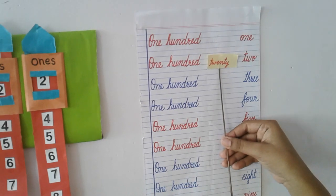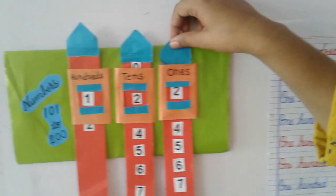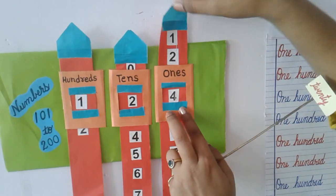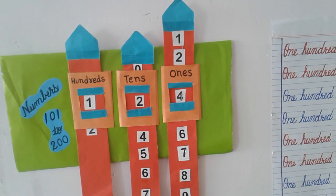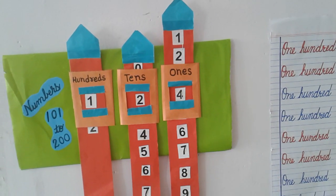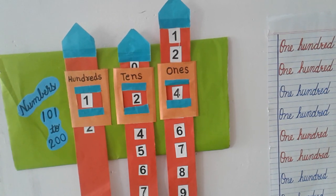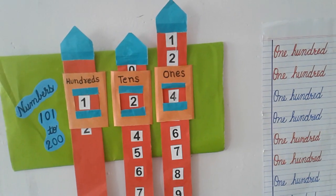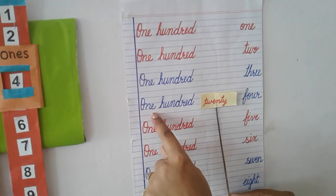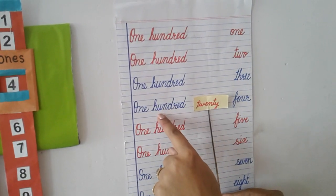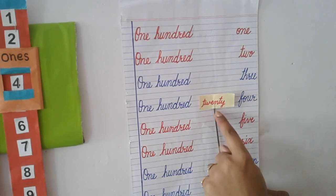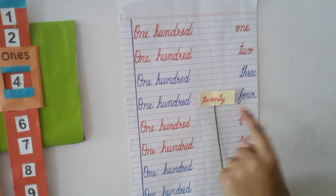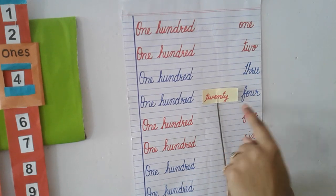Again, I am going to show you another question. Now write the answer for 124. Okay, now please see the answer. ONE HUNDRED TWENTY FOUR.